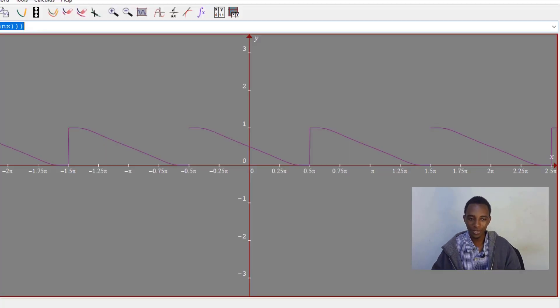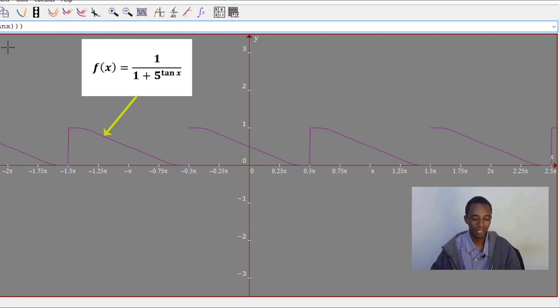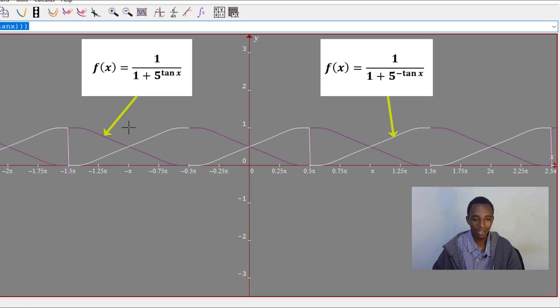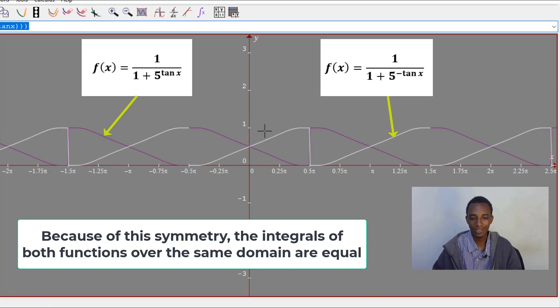Let me just show you this. Instead of having tan x, if I replace that with negative tan x, this is how the graph will look like. You can see the graph in white is the one which I've replaced with negative tan x.